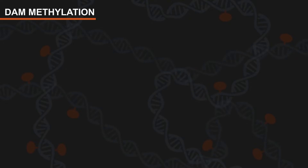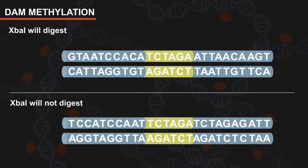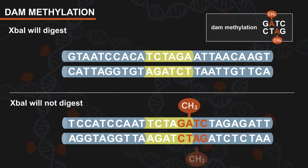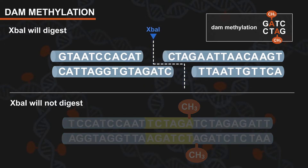To illustrate this, let's look at two XbaI restriction sites to see if they may be impaired by DAM methylation. Keep in mind that DAM methyltransferase recognizes the sequence GATC and methylates the adenine. In this first example, XbaI is able to digest the sequence because it does not overlap with the DAM methylation site.